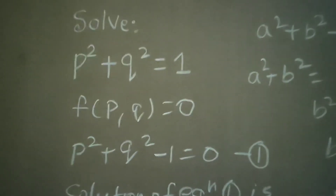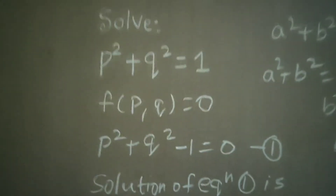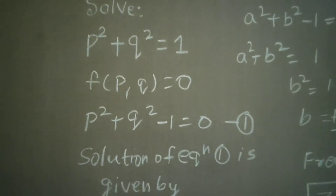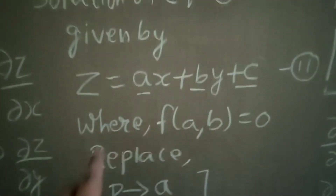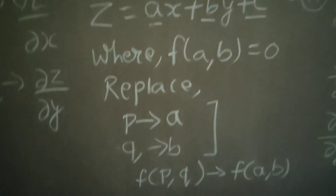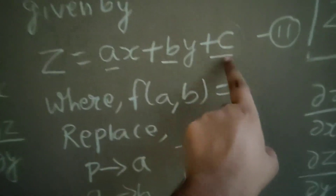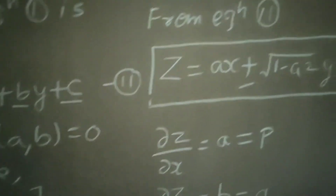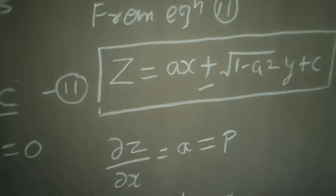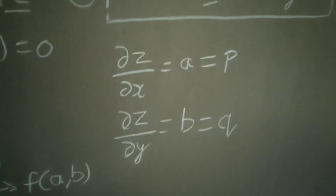So Type 1 is no more difficult for you. I've already done a question: √p + √q = 1 — you can also try that by yourself if you've understood this illustration. To summarize: f(p, q) = 0, solution is z = ax + by + c. Get f(a, b) by replacing p by a and q by b, so we can reduce three constants to two. Your final answer is z = ax ± √(1 − a²) · y + c. I hope you understood it. Thanks and have a very nice day.